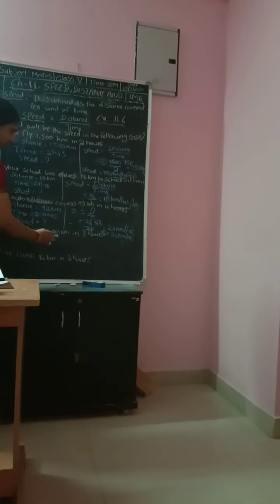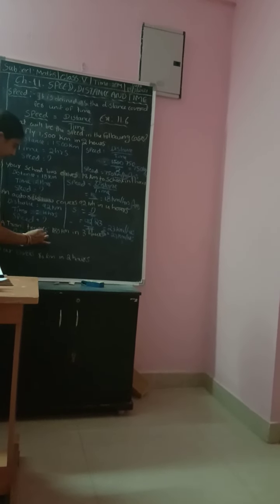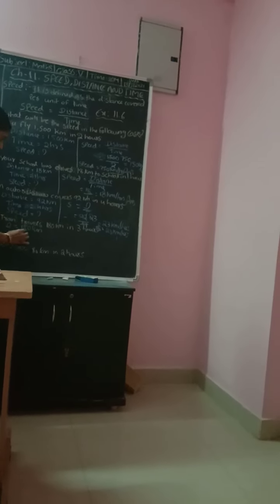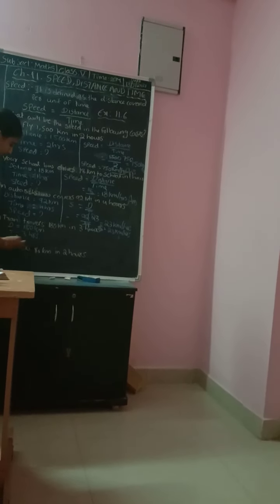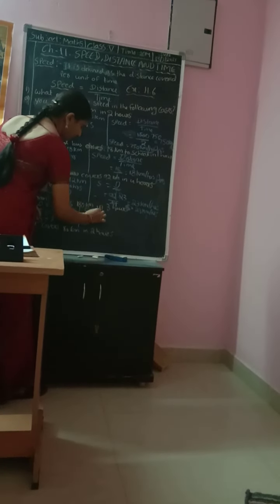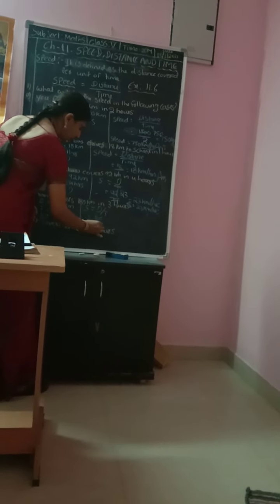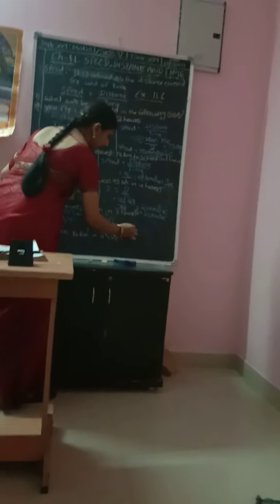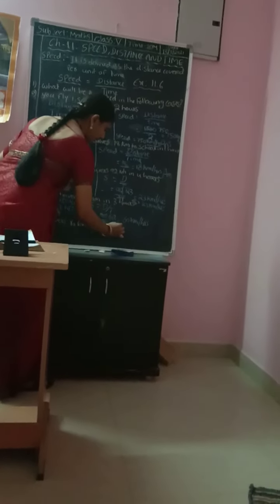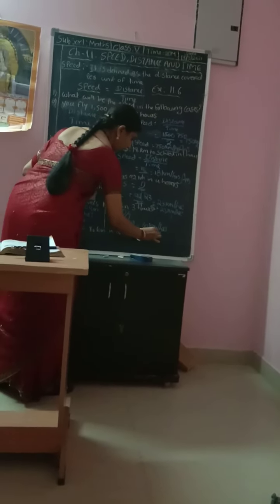Next problem D: a fishing boat covers 180 km in 3 hours. What is the formula of S? S equals D divided by T. So speed equals 180 divided by 3, which gives 60 km per hour. Mamalu, S is equal to 60 km per hour.